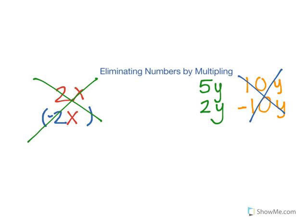So in order to cancel these out, I would have to make this one into a positive 10, so I'd multiply the top by 2. And to make the bottom negative 10, I would have to multiply the bottom by negative 5.